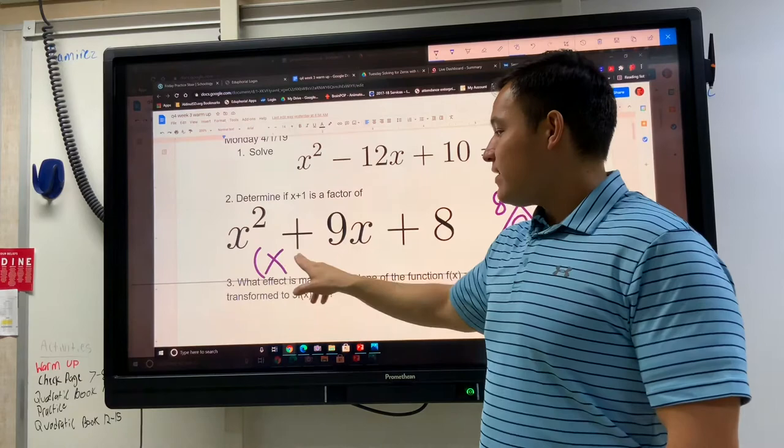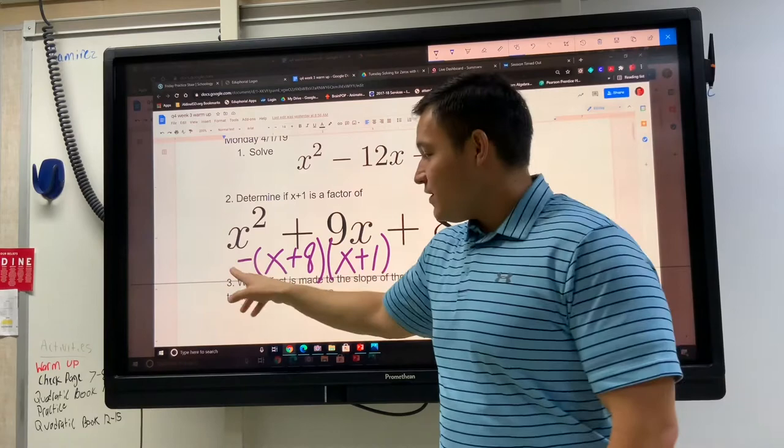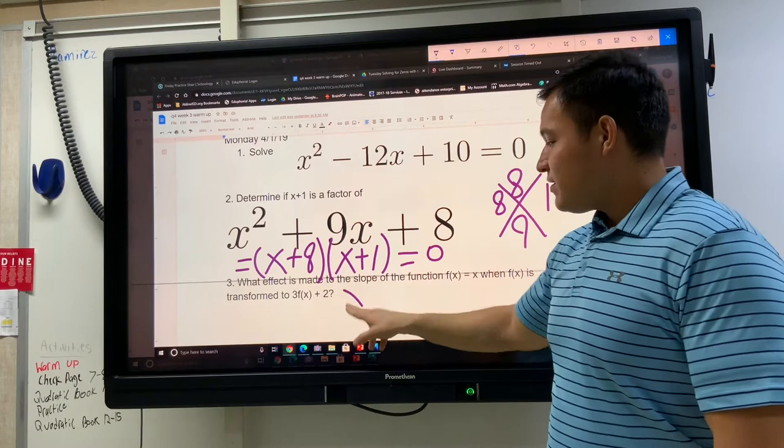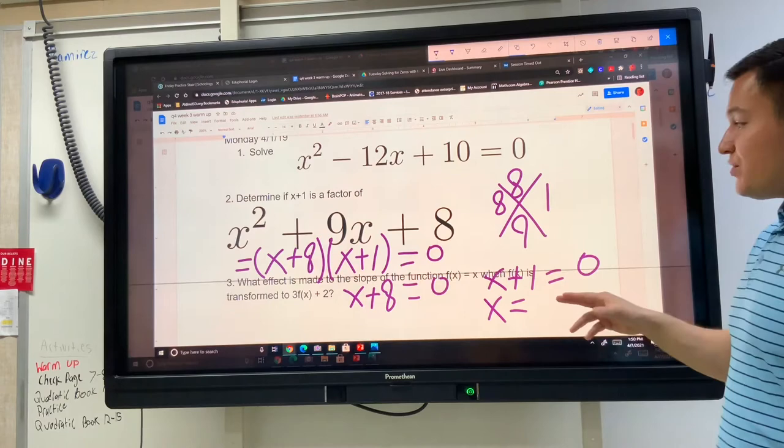x plus 8, x plus 1. This factored version of x squared plus 9x plus 8, these two things are equivalent, and now that we have this factored version, we could set this equal to 0 and solve each factor separately. You would do x plus 8 equals 0, x plus 1 equals 0, to get that the two solutions, the two roots to this quadratic equation, are negative 1 and x equals negative 8.